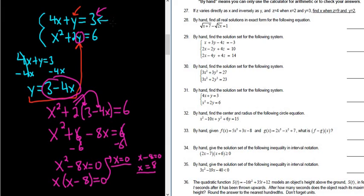So let's do each one individually. So first we'll do x equals 0. So when x equals 0, we're going to put it into the first equation. So we get 4 times 0 plus y equals 3. So we get y equals 3, because 4 times 0 is 0, so you get 0 plus y equals 3.